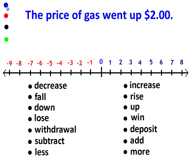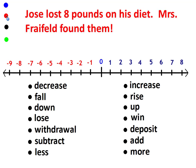The price of gas went up $2. Well, there's your up. The price of gas rose, it would rise, so it's a positive number. Jose lost eight pounds on his diet. If you lose eight pounds, it goes down, so that would be a negative number.